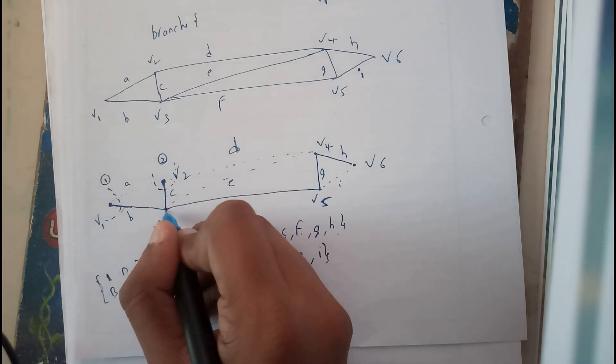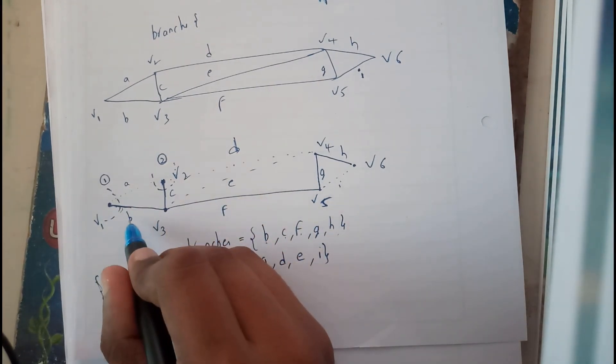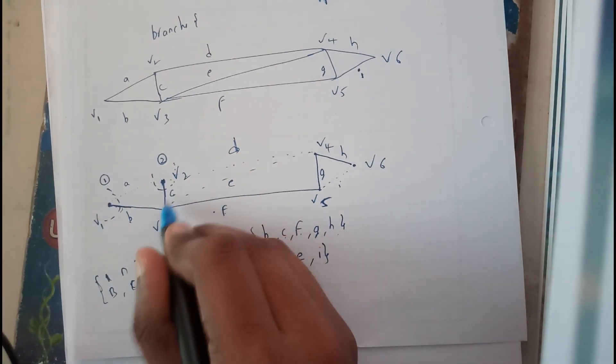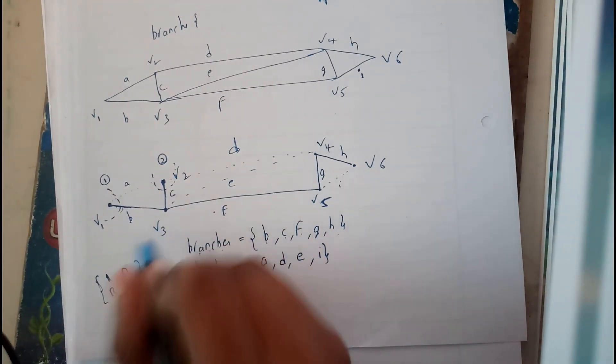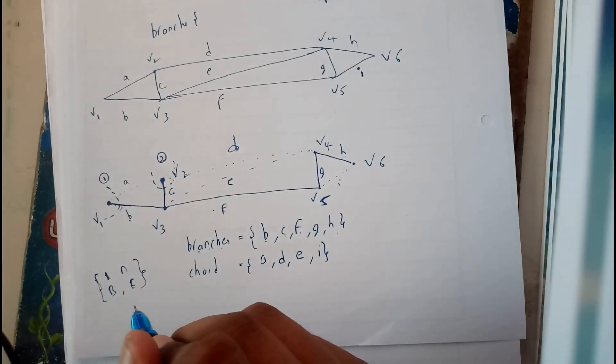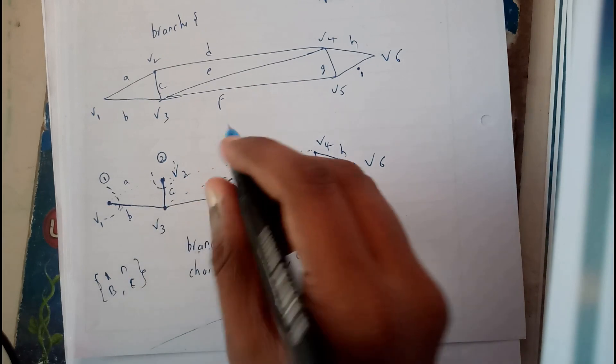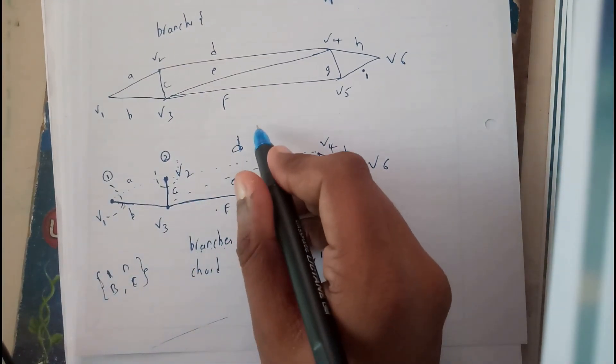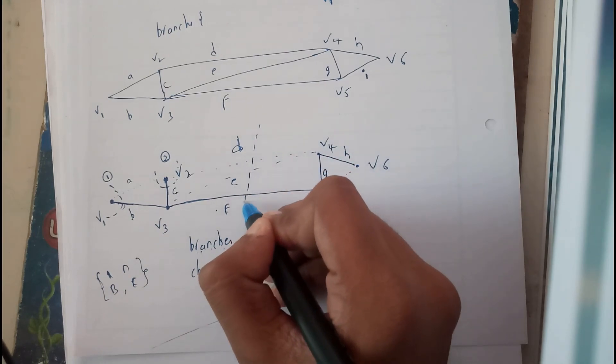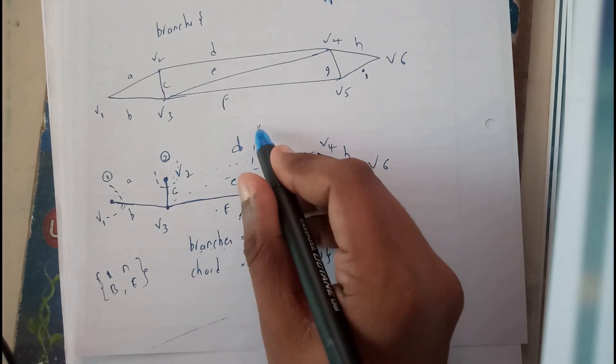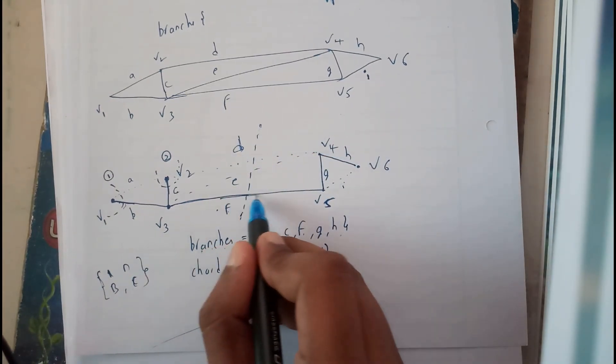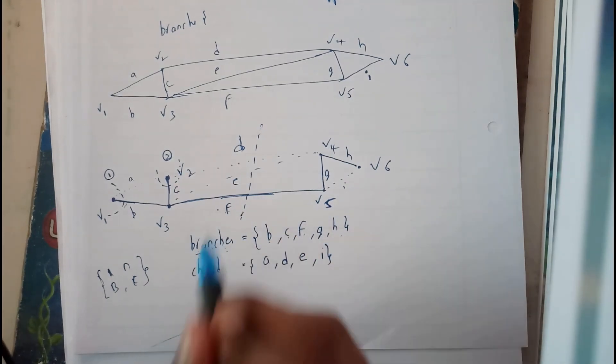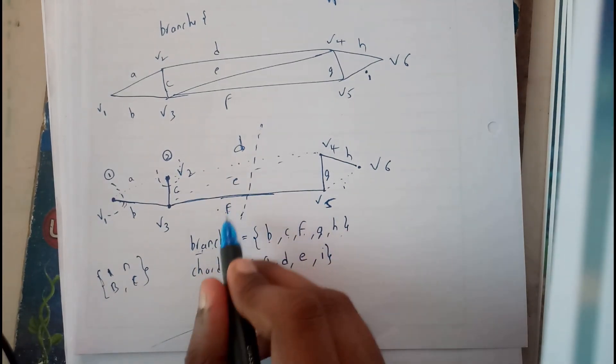Whenever we'll be trying to draw at V3, we already have B, C, F - all these three are branches, so at V3 it is not possible. Now for this F, we can directly draw a cut set like this so that it is passing through a single branch, that is F. This will be our third one.